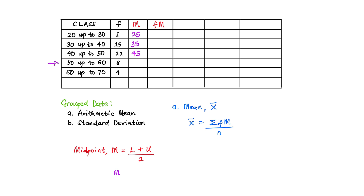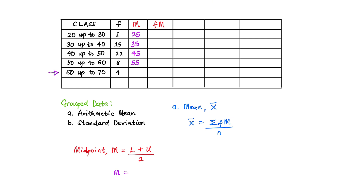The next class is 50 up to 60: the lower limit 50 plus the upper limit 60, divided by 2. 50 plus 60 is 110, divided by 2 equals 55. So the midpoint for that row is 55. And for the last row, the class is 60 up to 70: 60 plus 70 is 130, divided by 2 equals 65. So the midpoint for the last row is 65.